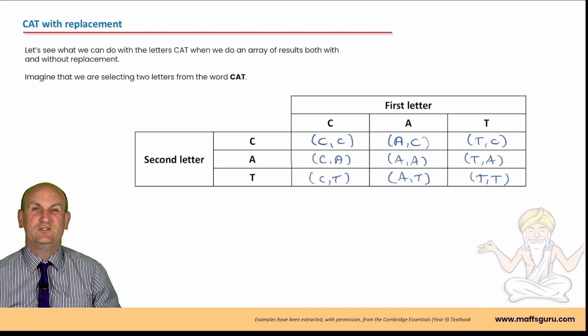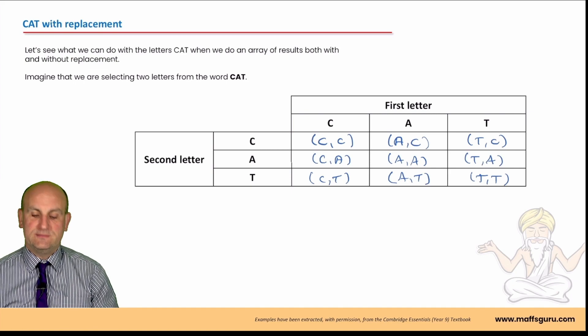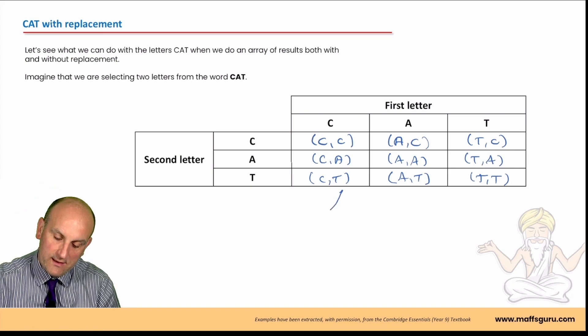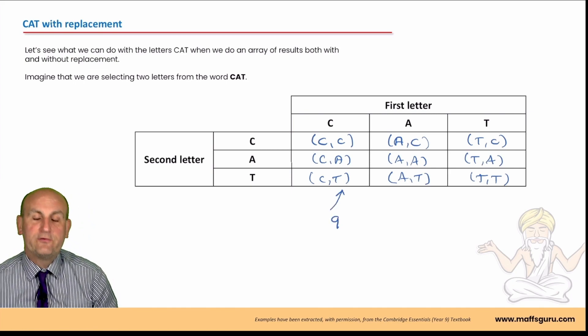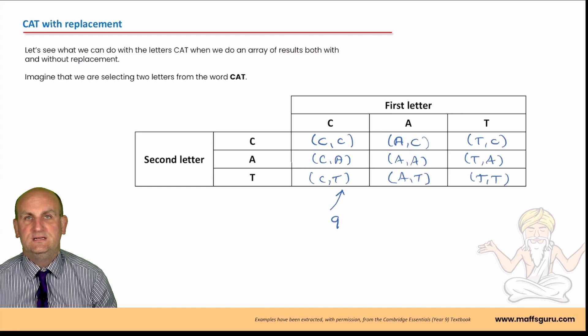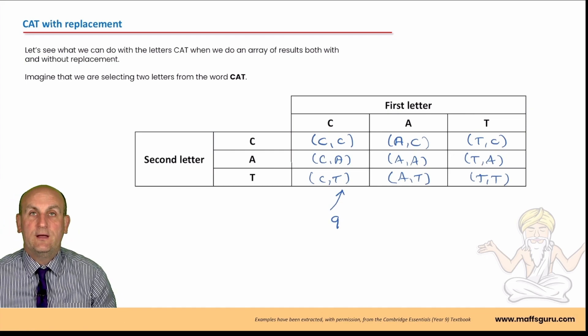Now, having done that, which is relatively quick and easy, I can see how many different outcomes there are. And again, by looking at this, I've got nine possible outcomes. They're going to help me with probabilities. I can actually use this table to work out some probabilities.